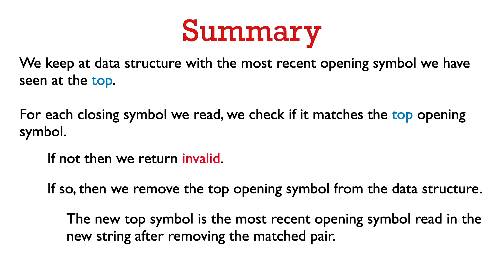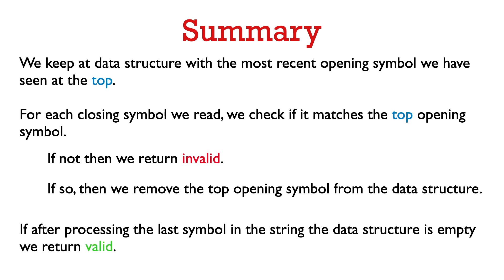To summarize the algorithm: we keep a data structure with the most recently read opening symbol at the top, maintained dynamically with respect to the current string after deletions. When we encounter a closing symbol, we check if it matches the opening symbol on top. If not, return invalid. If yes, remove the opening symbol from the top and continue. We don't literally have to delete pairs from the input string — the algorithm naturally maintains the most recent opening symbol at the top. If after processing the last symbol the data structure is empty, return valid.